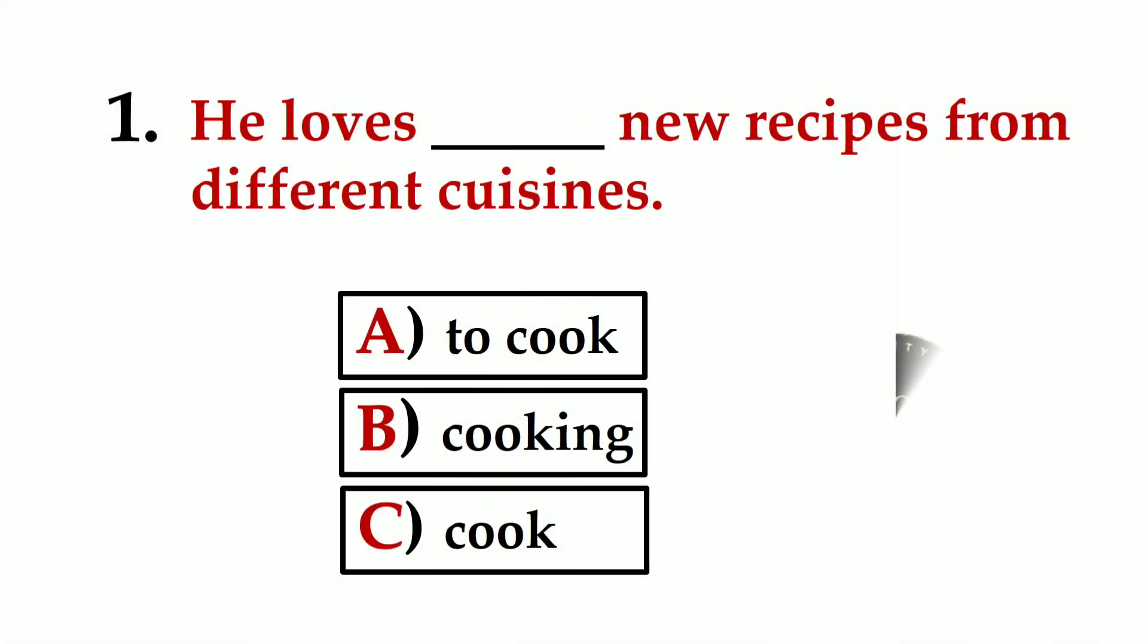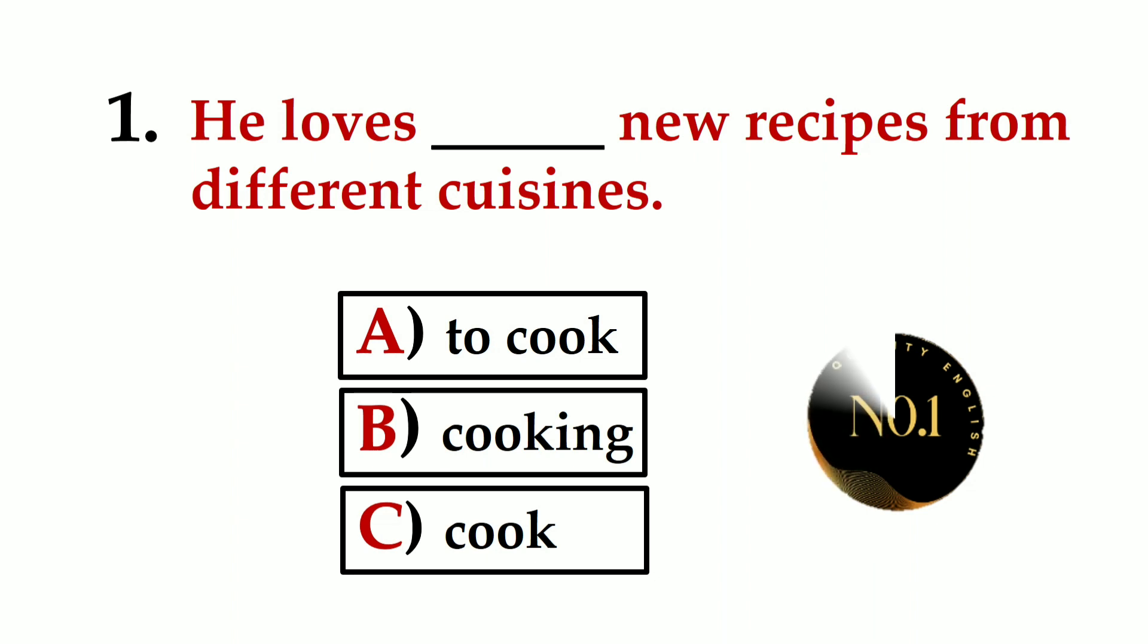Question one: He loves ___ new recipes from different cuisines. A) to cook, B) cooking, C) cook. The correct answer is B) cooking.